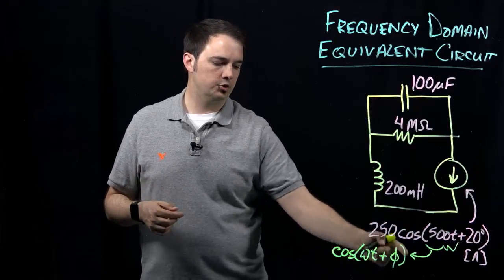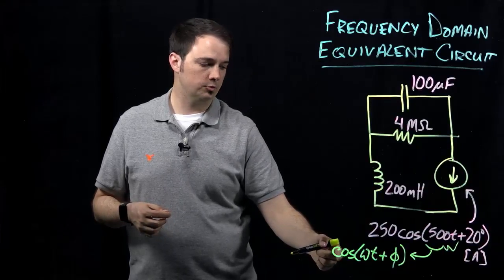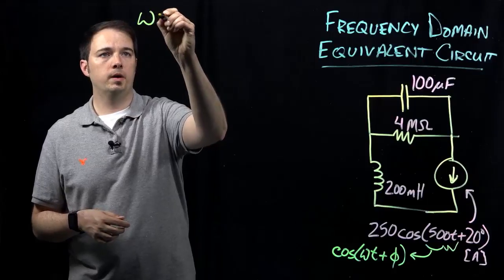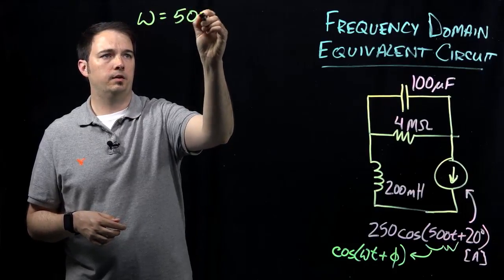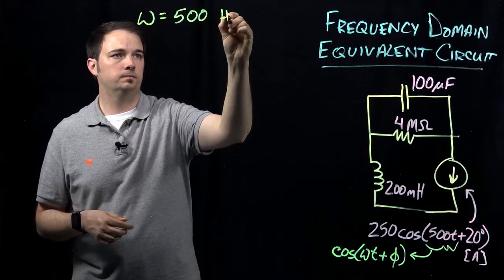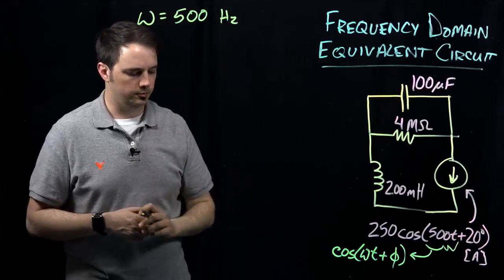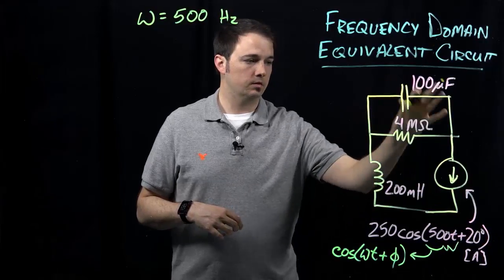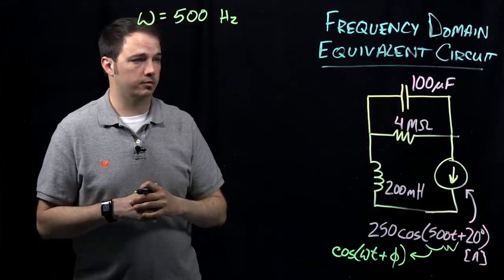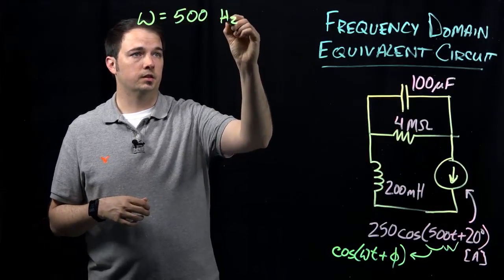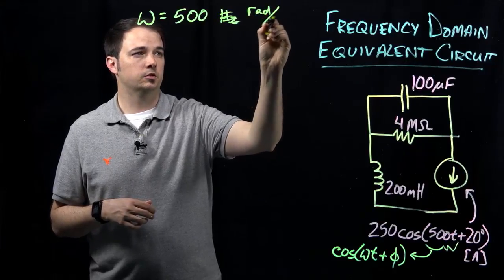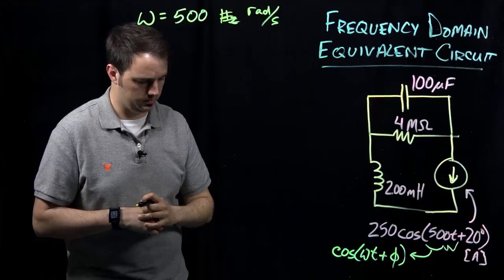So comparing this general form of what a sinusoidal source would tell us, we see that here our frequency, omega, is going to be equal to 500 hertz here. So we'll need to know that in order to be able to establish the impedances of our other given elements here. So I actually indicate this, not quite hertz, but we're angular frequencies, so indicated as radians per second.